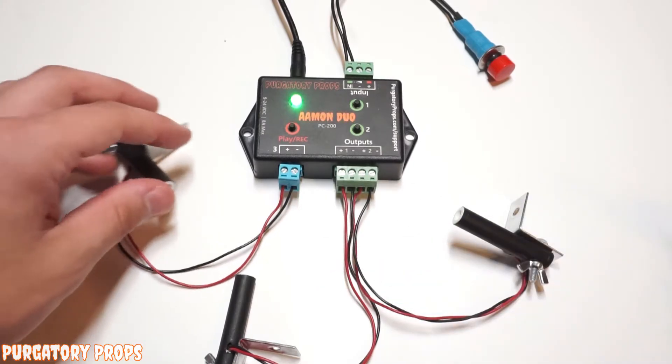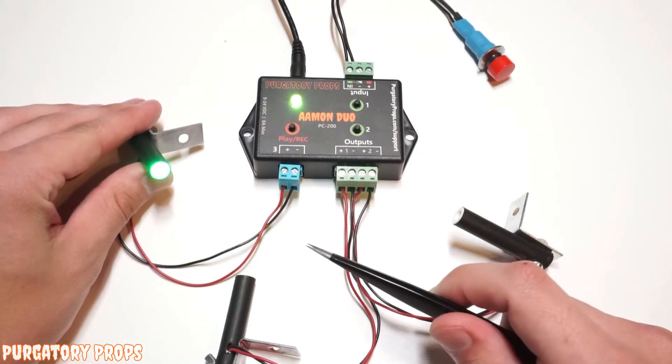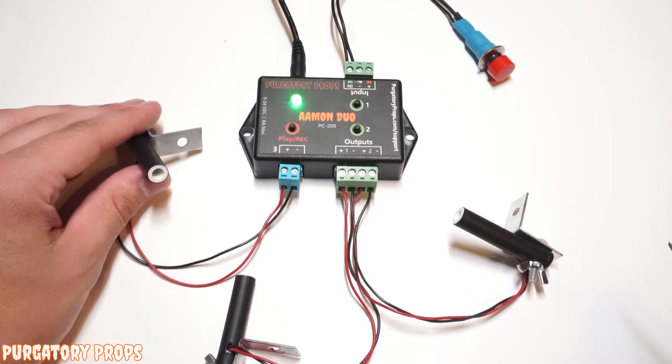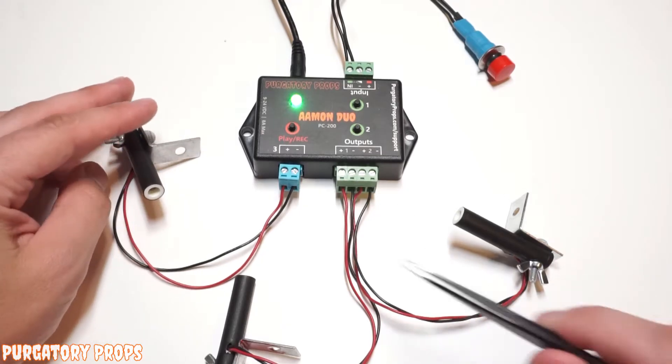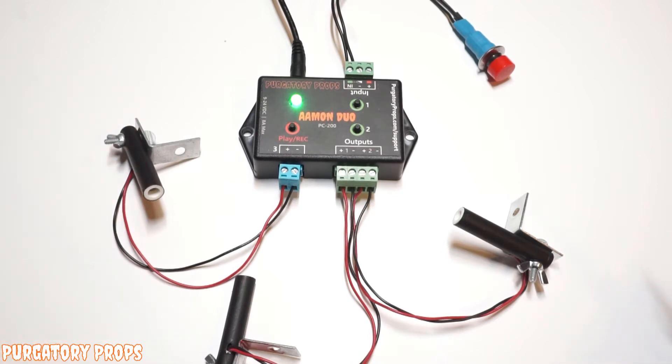So if we go ahead and play our animation, this third output turns on. And it's on for the entire length of the animation. So that is the default behavior. This use case can be used to turn on a light to light up your prop when it's triggered or trigger another controller at the exact same time.